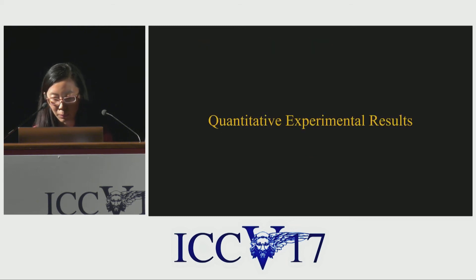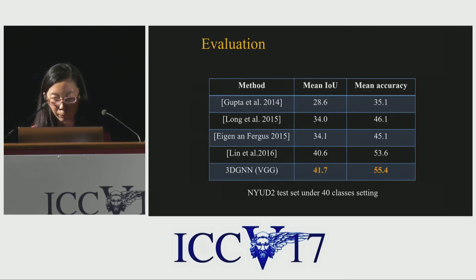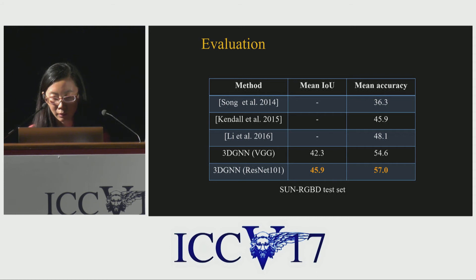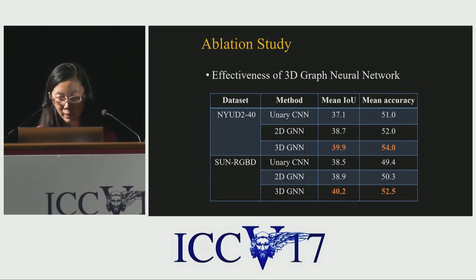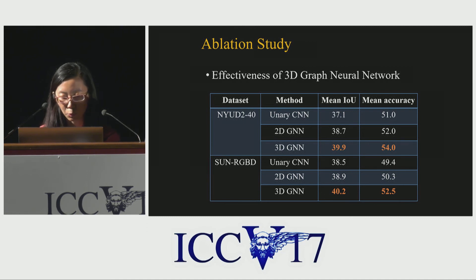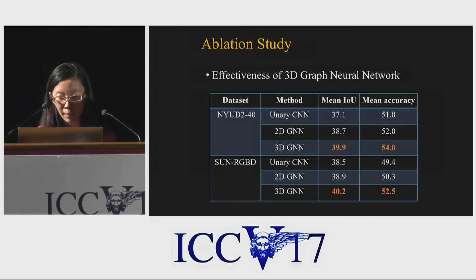Let's see some quantitative results. We validate our method on the NYU Depth v2 and SUN RGB-D datasets. On the NYU Depth v2 dataset, our method achieves state-of-the-art performance. We further conducted an ablation study by constructing a graph based on 2D locations, which we call 2DGN. Our 3DGN outperforms the 2D counterpart consistently, validating the effectiveness of learning representations over point cloud.